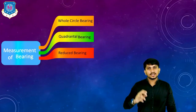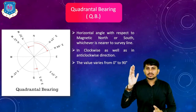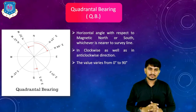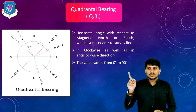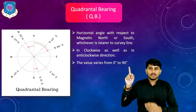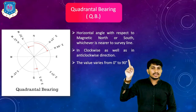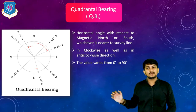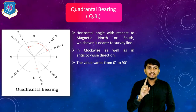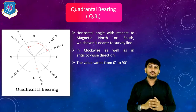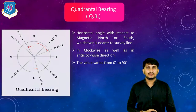Second type of bearing is quadrantal bearing or QB. In QB, the horizontal angle is measured with respect to magnetic north or magnetic south, whichever is nearest to the survey line. For example, N 66 degree E — north pole is nearer, so angle is made from north pole towards the line. For south 50 degree east — south pole is nearer, so angle is made from south pole. In quadrantal bearing you can go clockwise or anti-clockwise, but the reference must be the nearest magnetic north or magnetic south. The value of QB varies from 0 to 90 degrees.